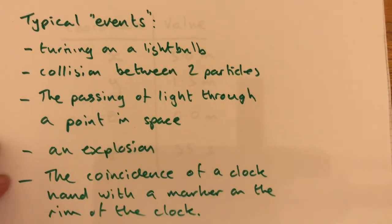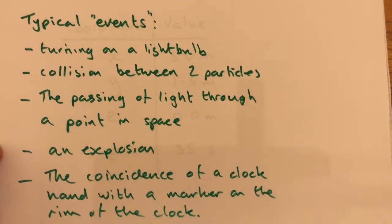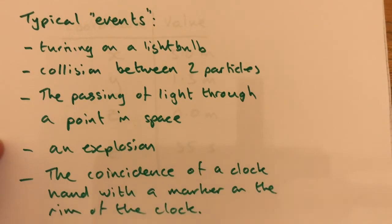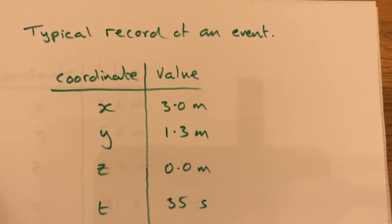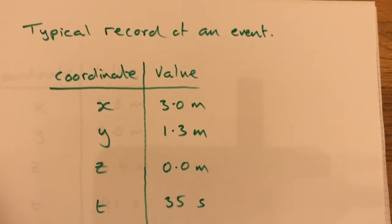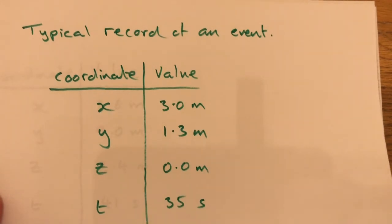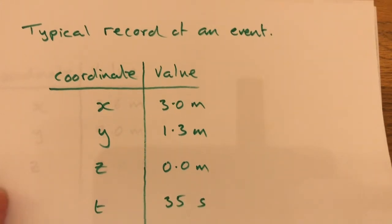If we're going to register or record one of these events, we would need to record four coordinate values. This is a typical record of an event. So we would record spatially an x coordinate, a y coordinate, and a z coordinate, and then we would also record a time.